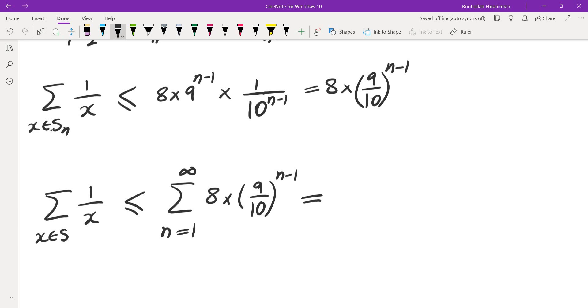Now the nice thing about this is this is a geometric sum. Common ratio is 9 tenths. So the sum would be the first term, which is 8, divided by 1 minus common ratio, and if you evaluate this, this is going to be 80.